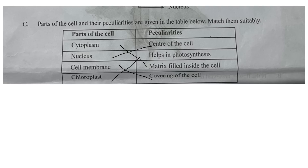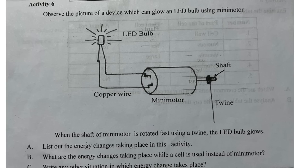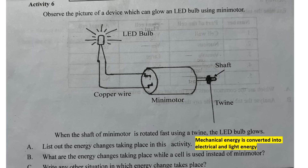Cytoplasm helps in photosynthesis. Next question: observe the picture of a device which can glow an LED bulb using a mini motor. List out the energy changes: mechanical energy is converted into electrical and light energy. When a cell is used instead of a mini motor, chemical energy is converted into electrical and light energy.